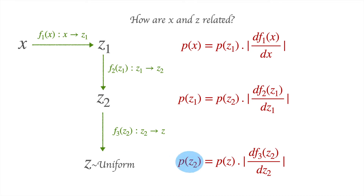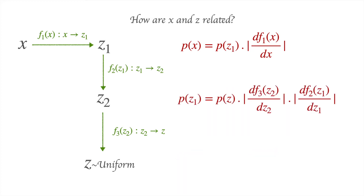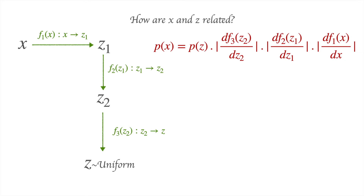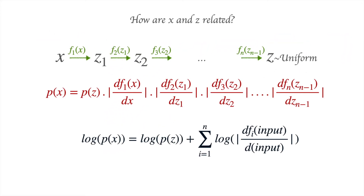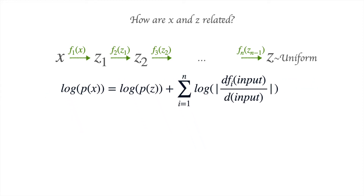Using the expression we just saw, we can write down the relationships between X and Z1, Z1 and Z2, and Z2 and Z. Substituting these in sequence gives us the relationship between P(X) and P(Z). We can generalize this to any number of transformations: if we have n transformations in sequence with output Z, then P(X) = P(Z) times the product of absolute values of derivatives of the transforming functions. Taking log on both sides: log P(X) = log P(Z) + the sum of log absolute values of derivatives. This equation is the key idea behind composing multiple flows.